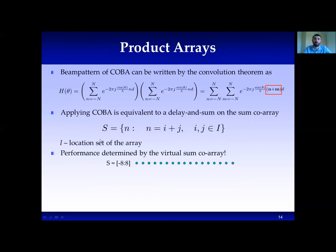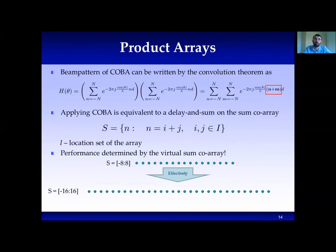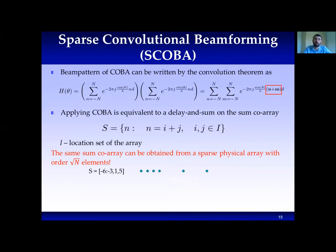The idea behind COBA is the idea of product arrays. Applying COBA on the delayed signals is equivalent to applying delay and sum on the sum co-array of the original array, which is twice as big. For example, an array from minus eight to eight effectively becomes minus sixteen to sixteen after COBA. We can further reduce data size by choosing a sparse array in the order of the square root of the original full array, and still result in image quality as good as delay and sum. For example, choosing a sparse array effectively results in a full array from minus seven to zero.